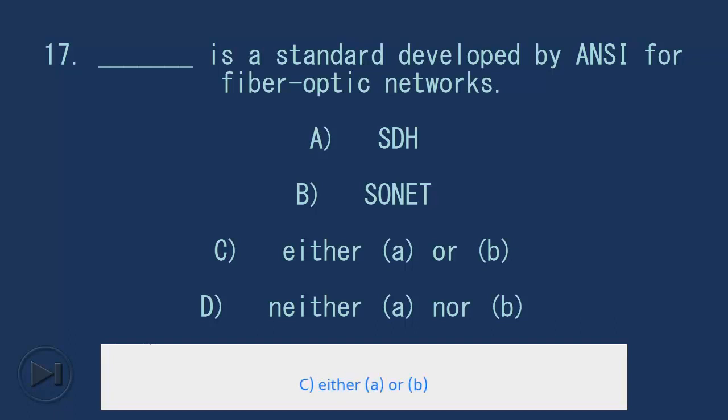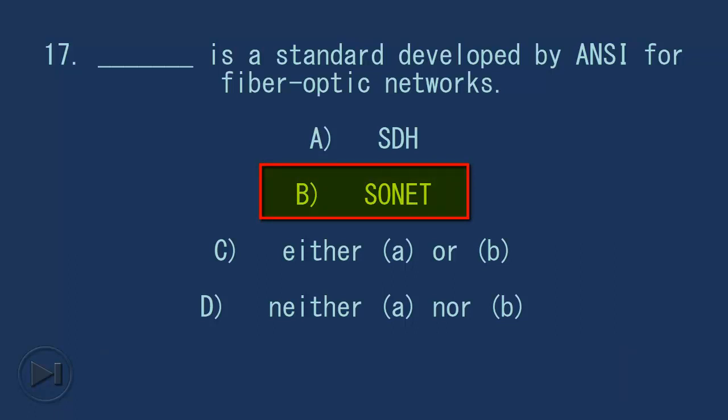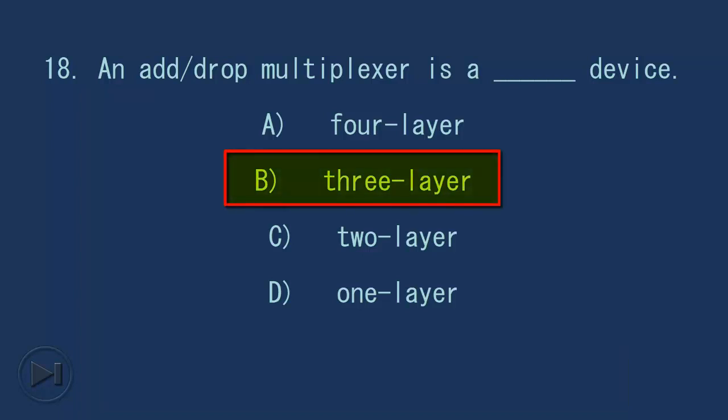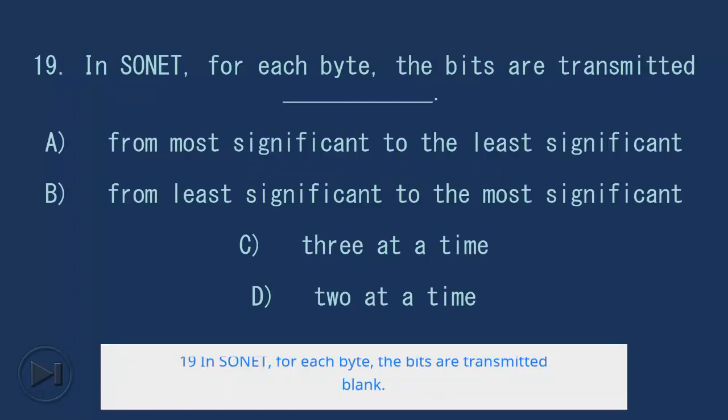18. An add-drop multiplexer is a blank device. A. Four layer, B. Three layer, C. Two layer, D. One layer. Answer: B. Three layer.